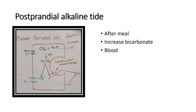The increased bicarbonate ion in the plasma is filtered through the urine, making the urine alkaline in nature. This increase in pH in the systemic circulation slightly depresses respiration. After the postprandial alkaline tide, it increases the alveolar pCO2.